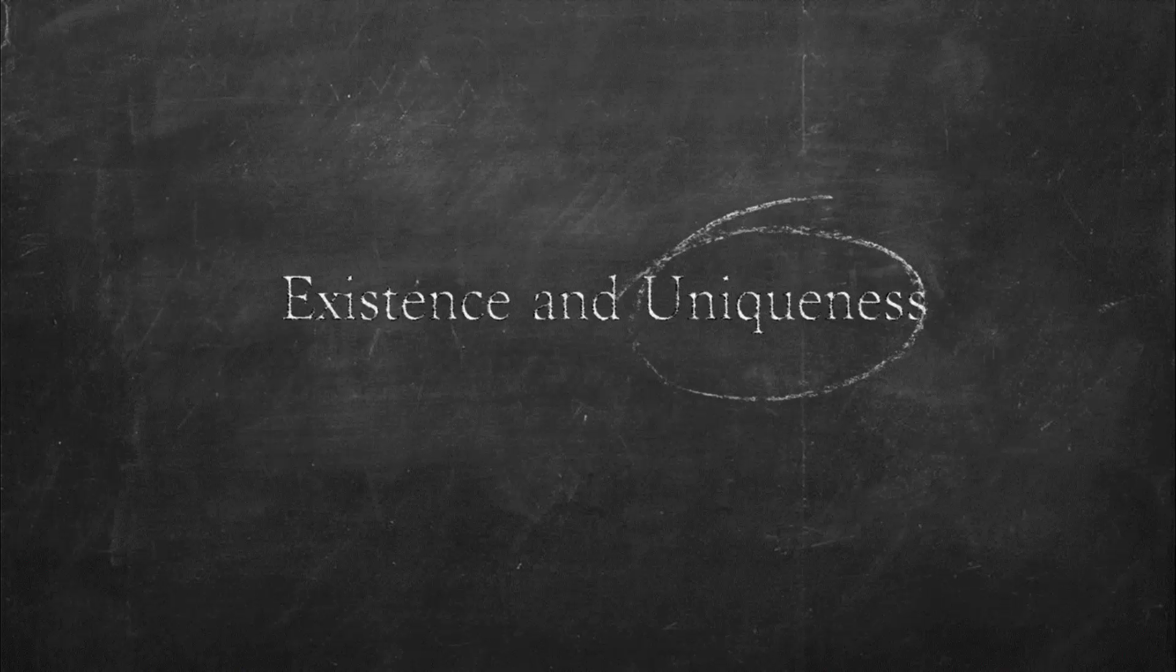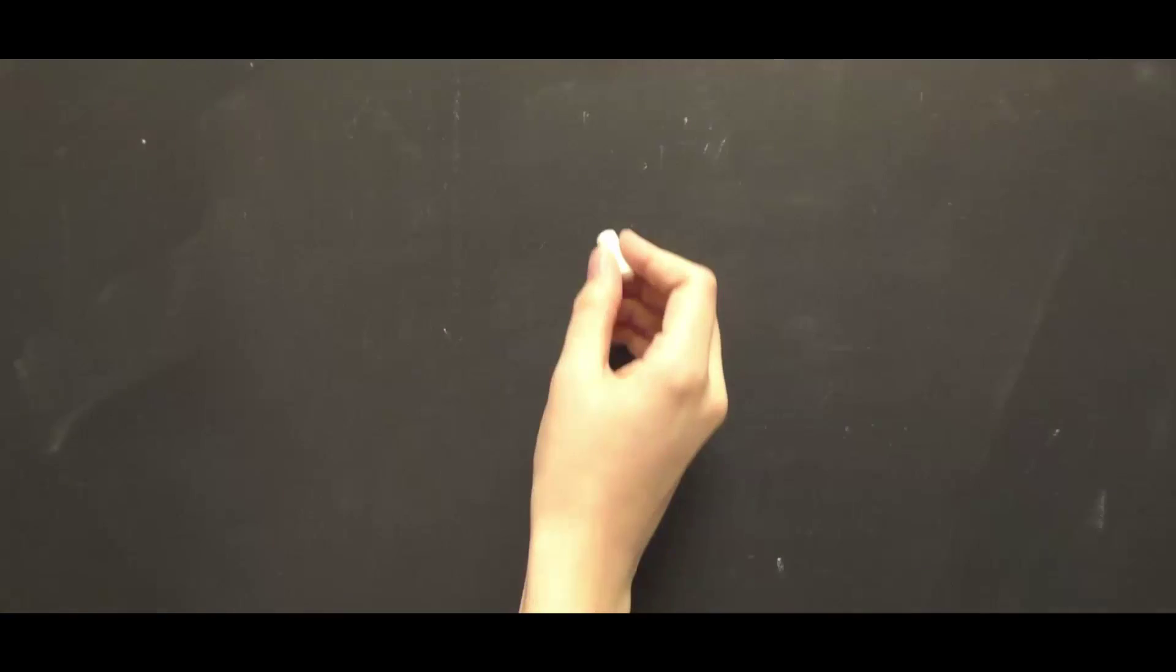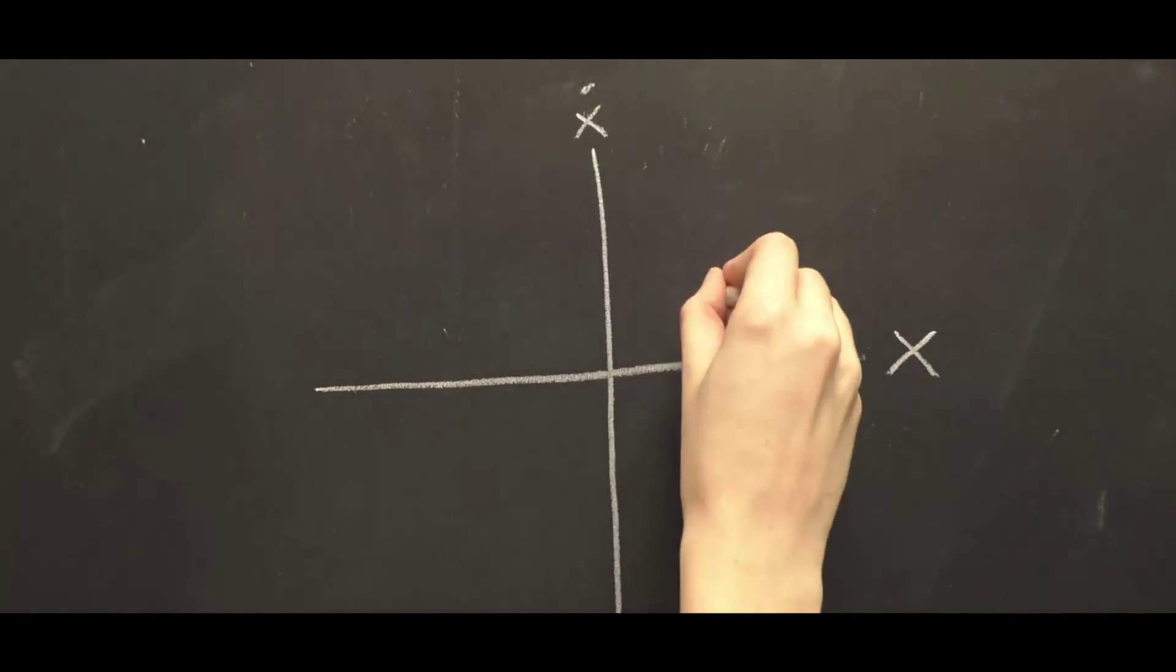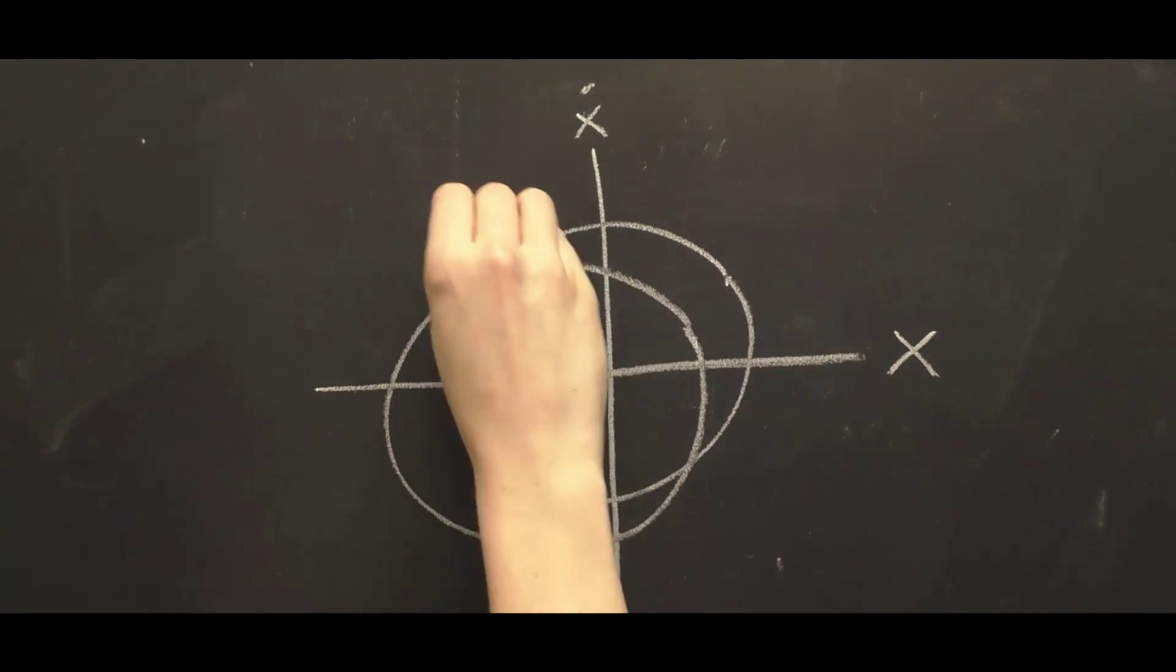Another important property of a system evolving through phase space is uniqueness. That is, every orbit through phase space is unique. Two orbits can never exist at the same point in phase space.